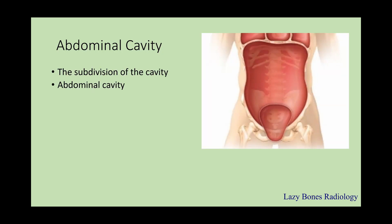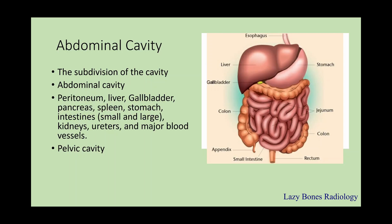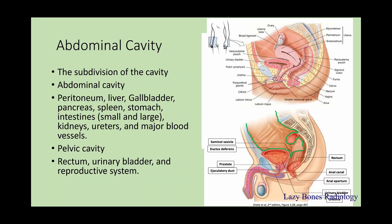The second main cavity is the abdominal cavity. This subdivides into the abdominal cavity, or the main part, and the pelvic cavity. These two can be named separately or referred to as the abdominopelvic cavity. Knowing the internal organs is very important, especially in the abdomen, where there is a multiple array of organs with unique qualities. Organs within the abdomen include the peritoneum, liver, gallbladder, pancreas, spleen, stomach, both the small and large intestine, kidneys, ureters, and major blood vessels. In the pelvic cavity, this includes the rectum, urinary bladder, and the reproductive systems of both male and female.